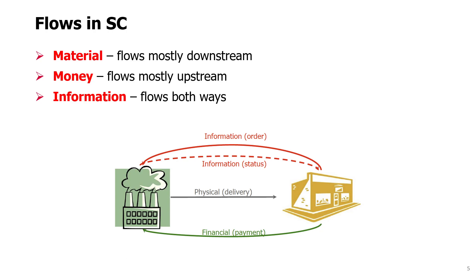Then there is information, which flows both ways. We need to know if something has been sold so that an order can be made — a downstream stage informs the upstream stage to deliver additional quantity. Information may also flow downstream, for example when there is a new version of a product or a completely new product, and we need to inform customers or intermediate stages about it so they can deliver it to customers.